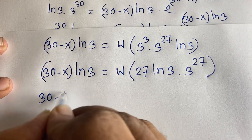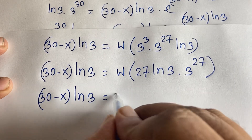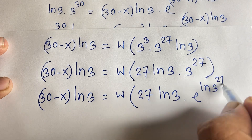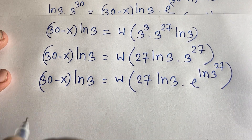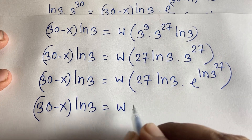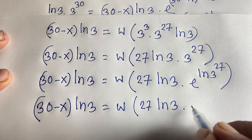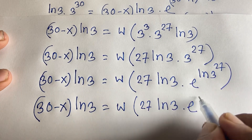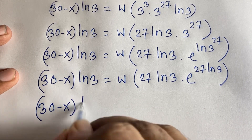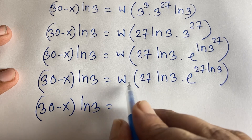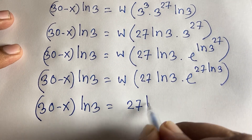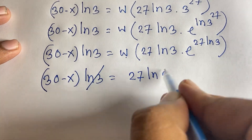So (30 minus x) times ln 3 equals W(27 ln 3 times e to the power (27 ln 3)). Using the Lambert W identity W(a times e to the power a) equals a, I can say (30 minus x) times ln 3 equals 27 ln 3. The ln 3 cancels on both sides, giving 30 minus x equals 27.